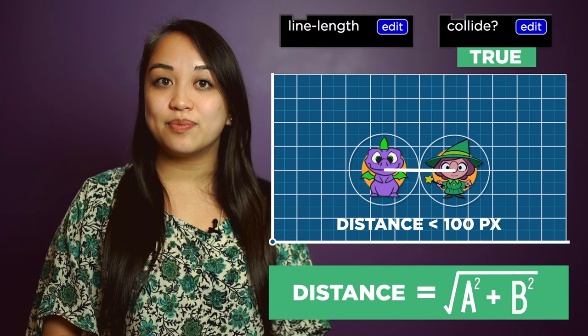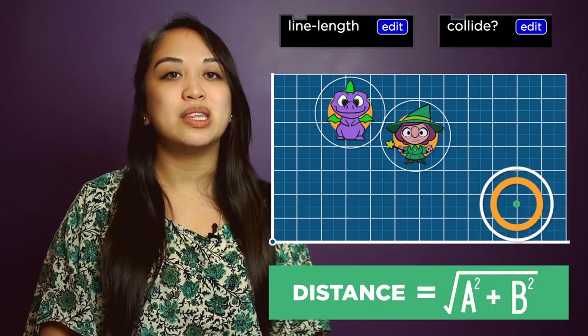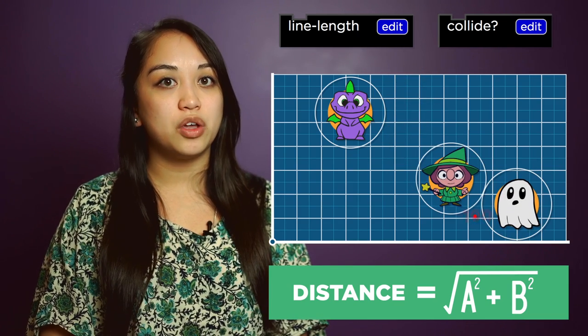If everything works, you'll see that when the player collides with a target, your score increases, and when the player collides with a danger, your score decreases.